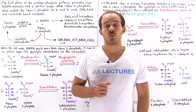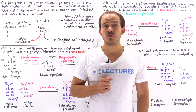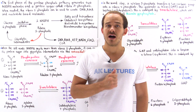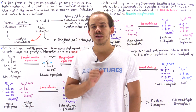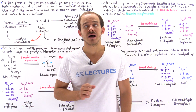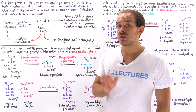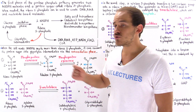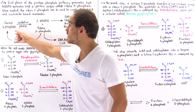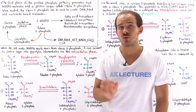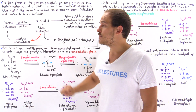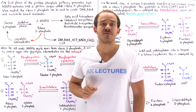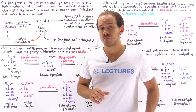The pentose phosphate pathway consists of two different phases: the oxidative and the non-oxidative phase. Previously we focused on the oxidative phase, where cells transform a single glucose 6-phosphate molecule into two NADPH molecules and one ribose 5-phosphate molecule.